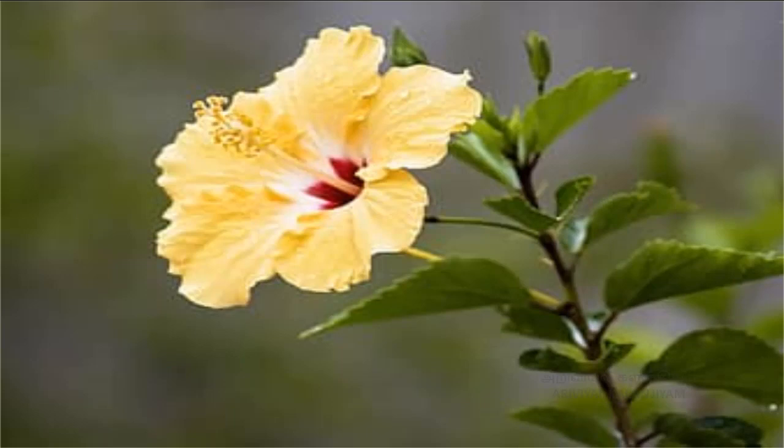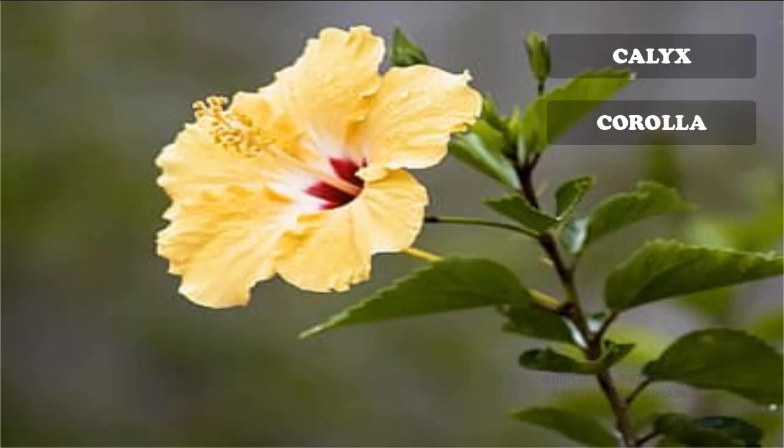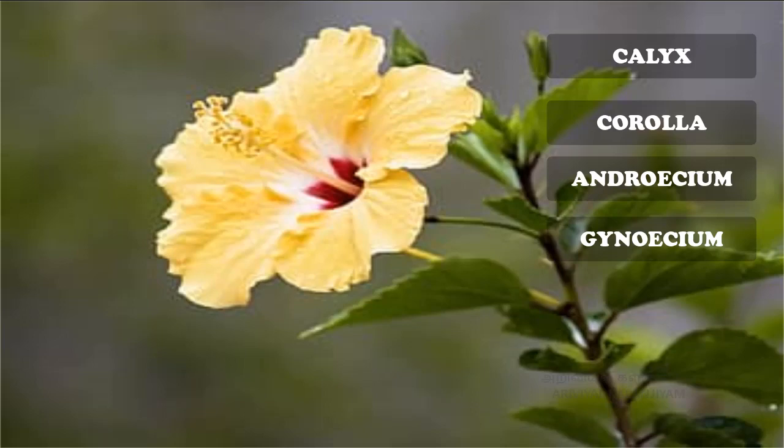So the four whorls of the flower — calyx, corolla, androecium, and gynoecium — all together form an entire flower.